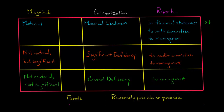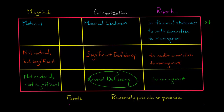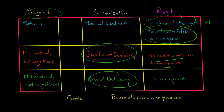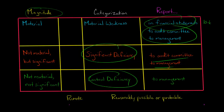In terms of the least severity — not material and not significant — we just call that a control deficiency, and you would just tell management about it. So the factors are magnitude and likelihood, and that determines your responsibility as an auditor. A material weakness is the most serious and goes in the financial statements. A significant deficiency means you tell the audit committee and management. And a plain control deficiency — you just notify management. All three are issues with internal controls; they just have different names based on severity.